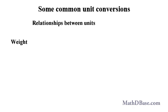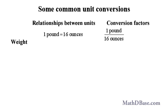In terms of weight in the American-British system, we have the relationship 1 pound equals 16 ounces. From that, we can derive two conversion factors, 1 pound per 16 ounces, and 16 ounces per pound.